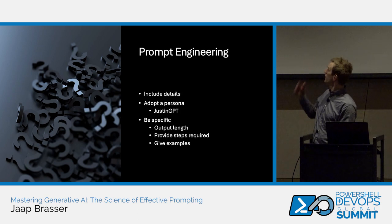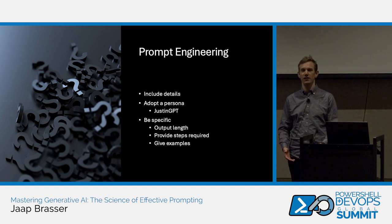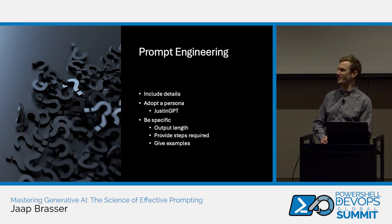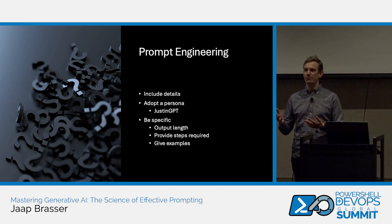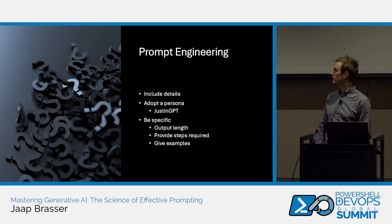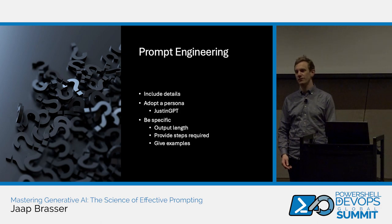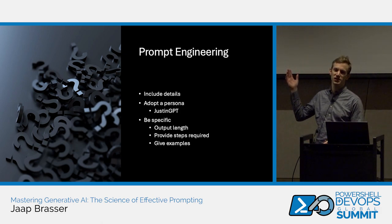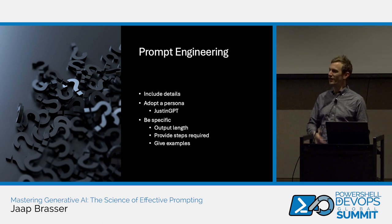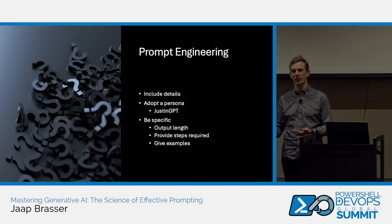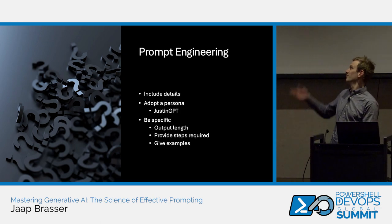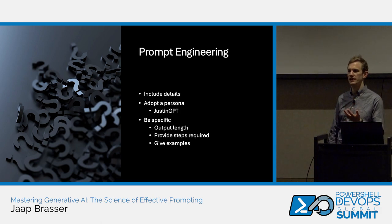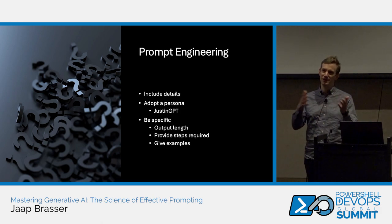You can ask it to adopt a persona — tell it that it is a software developer with 30 years of PowerShell experience, which would be the only person on the planet with that experience. By guiding it and putting it in that state of mind, you can get better results. At PSConf EU, I prompted ChatGPT to pretend it was just a Groot, and when I prompted it afterwards for code or PowerShell questions, it came up with better-reasoned answers and better quality code. Obviously a bit of a joke, but by putting it in that context, it gets better results.